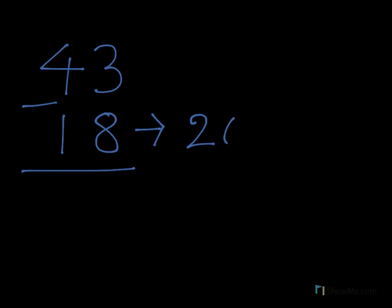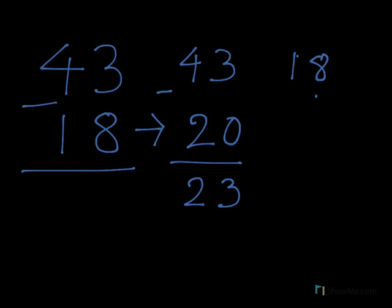Now 18 will be rounded up to its nearest 10, that is 20. 43 minus 20 is 23. So from 18 to 20 there are two numbers, so we will add this 2 with 23.